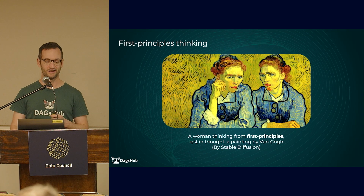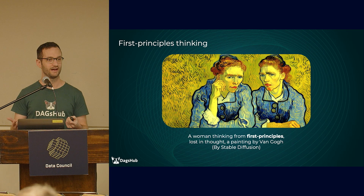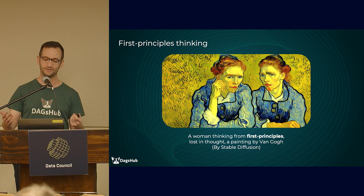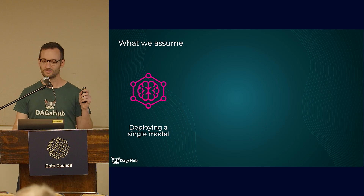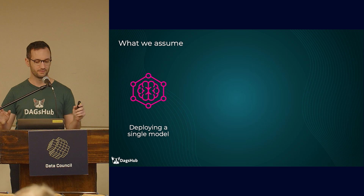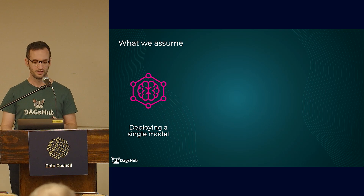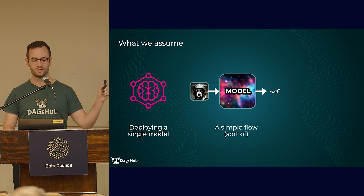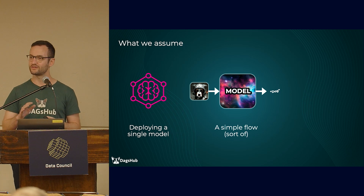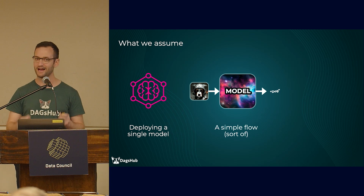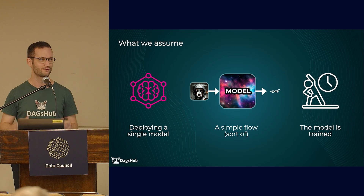I'm talking a lot about first principles thinking — let's define exactly what that means. We're going to discuss the basic assumptions we have about the problem, break the problem down into the smallest irrefutable pieces, and try to build up the solution from those pieces bottom-up. So what am I assuming here? First, I'm assuming that we are deploying a single model — the simplest case for deployment — so that you can easily understand the process and extrapolate it to your use case later. We're also going to take the simplest flow, where the black box model contains multiple steps but they're all bundled into one package. And I'm not going to discuss anything that relates to training that model — I'm assuming it's ready to go and you're now trying to figure out what to do with it.